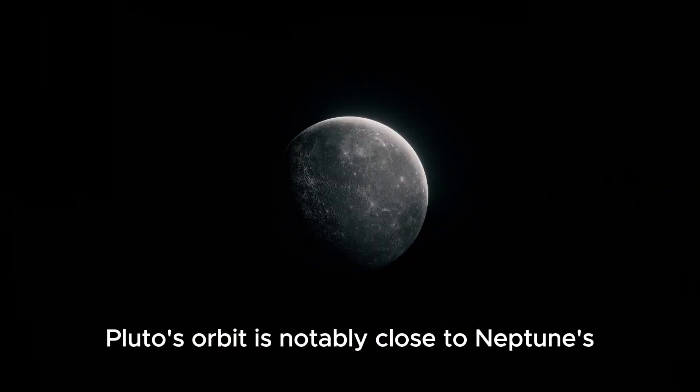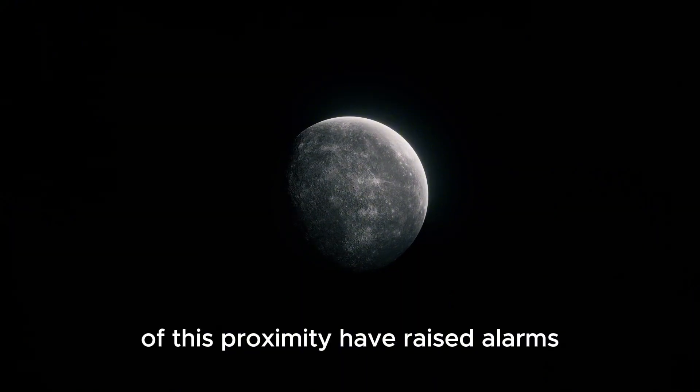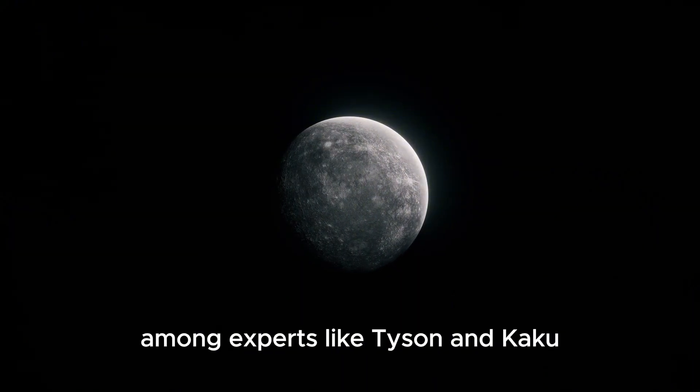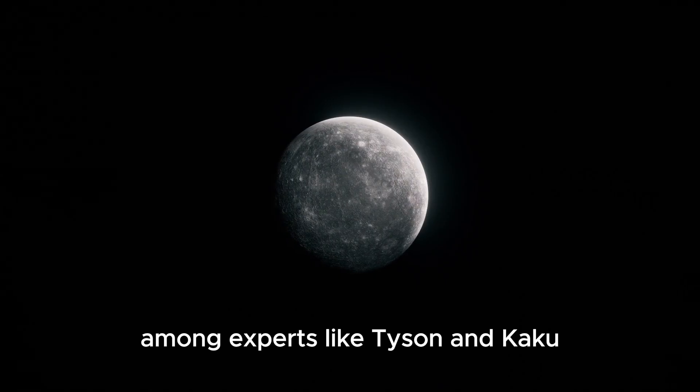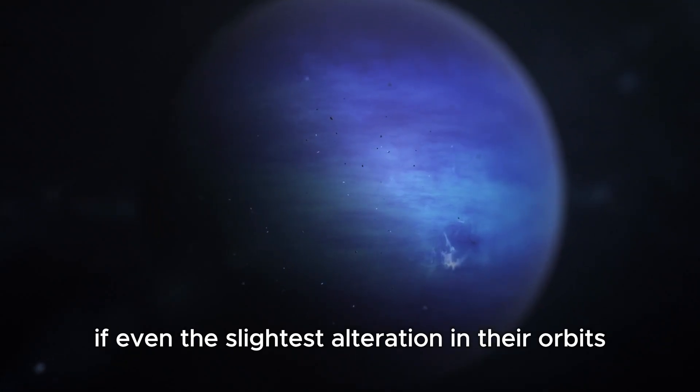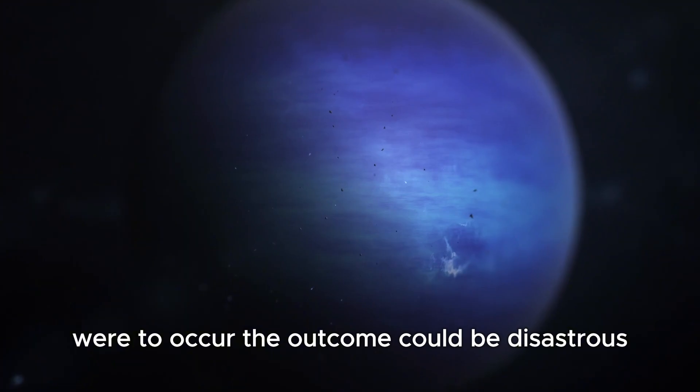Pluto's orbit is notably close to Neptune's, and the implications of this proximity have raised alarms among experts like Tyson and Kaku. If even the slightest alteration in their orbits were to occur, the outcome could be disastrous.